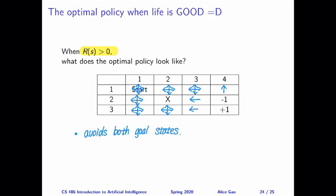That's everything for this video. I've shown you a few more examples of optimal policies for different reward functions, and we've made interesting observations about how the optimal policy changes based on changes in the reward function. I haven't told you how to solve the Markov decision process yet and how to get these optimal policies, but I hope these examples spark some interest. Thank you very much for watching. I'll see you in the next video.